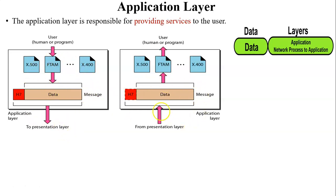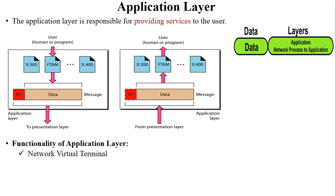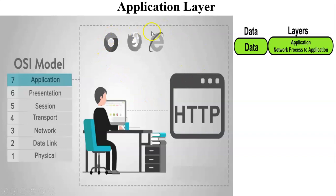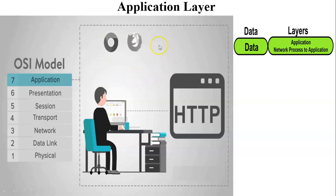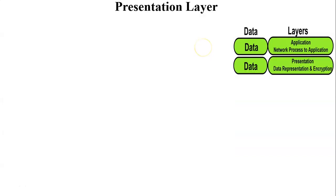At the receiver side, when data comes from the presentation layer to the application layer, header 7 is read and then removed, and data is passed to the particular application of the user. The functionalities of the application layer include: network virtual terminal, meaning telnet or remote access of a PC from one location to another; file transfer, access and management; and mail services. Through all these applications, the user sends and receives data at the application layer.